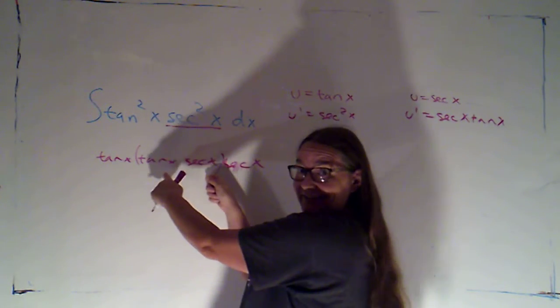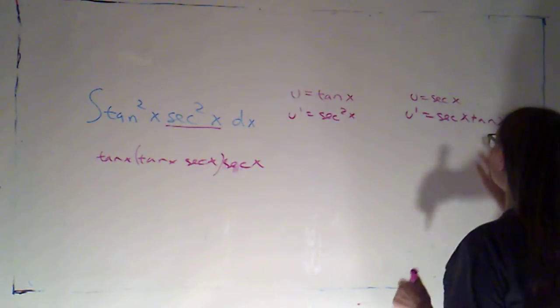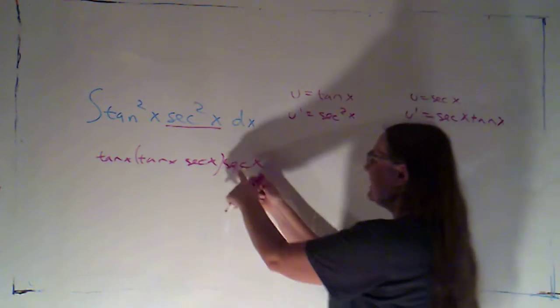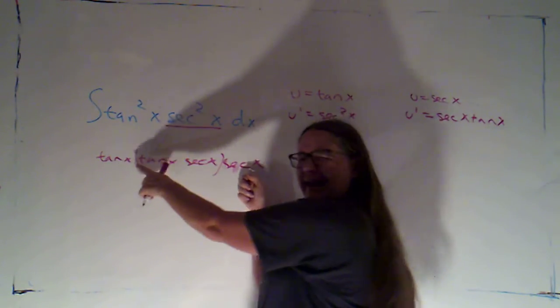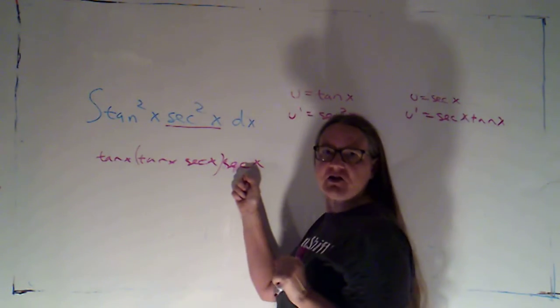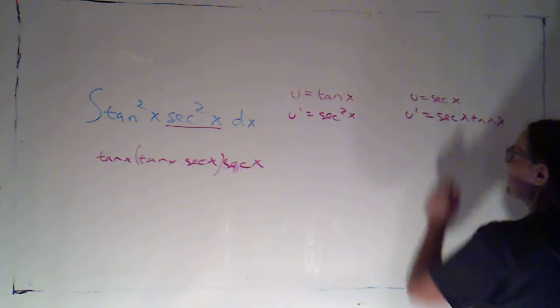There's a tangent times secant. I just need one of each to get absorbed into the du. Then this would become u, but then I'd have this extra factor of tangent. So it doesn't look like this one's going to work so nicely, but this one will.